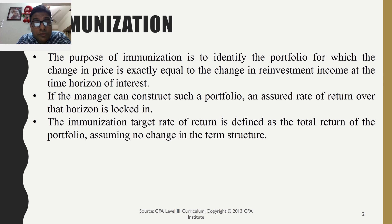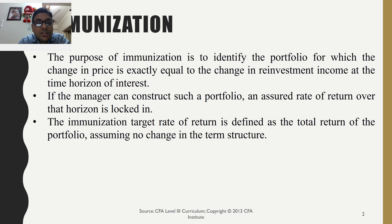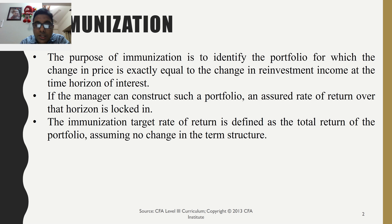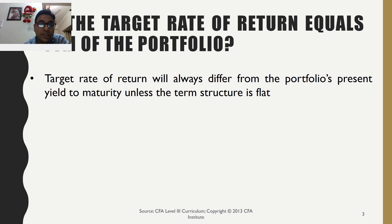So what is the immunization target rate of return? It is defined as the total return of the portfolio assuming no change in term structure. The question then becomes: if the current term structure is upward sloping, does the target rate of return equal the YTM of the portfolio?